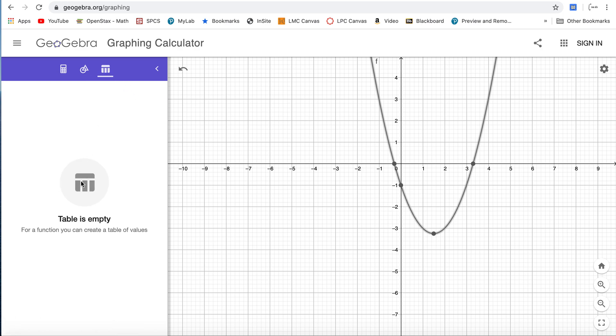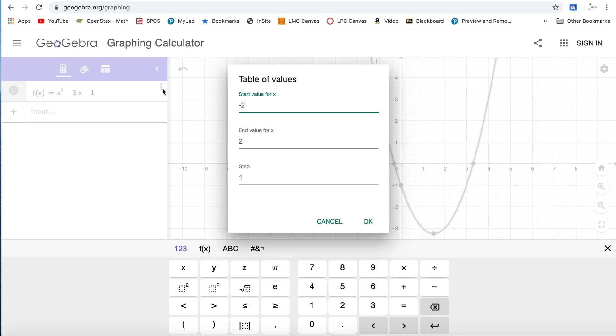So how do I get a table created? Let's click on these vertical dots and click table values. Let's create a table from negative five to positive five and go ahead and hit OK.